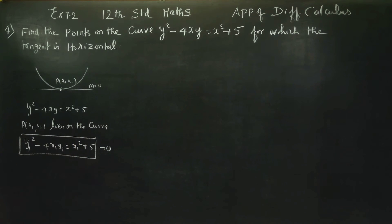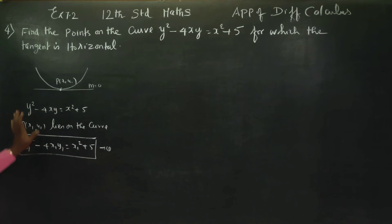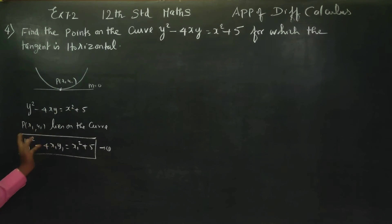This is stage 1. What we are doing here: we substitute the point into the equation to confirm it is satisfied — that means the point lies on the curve.